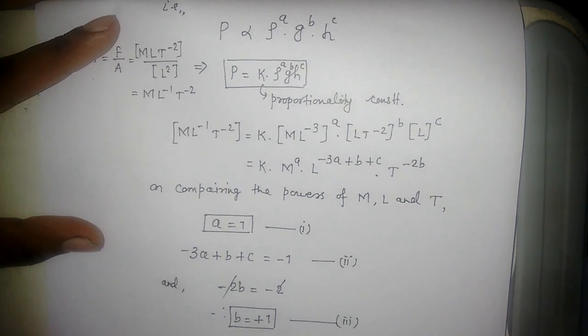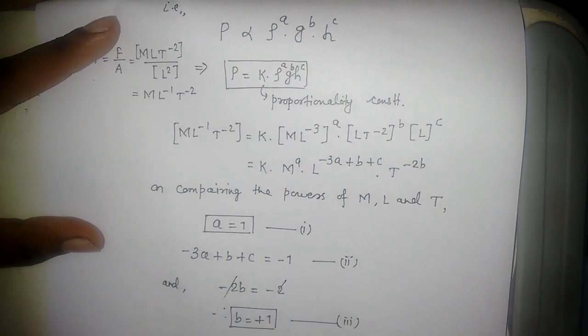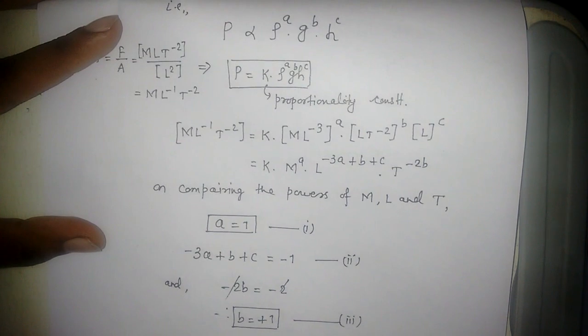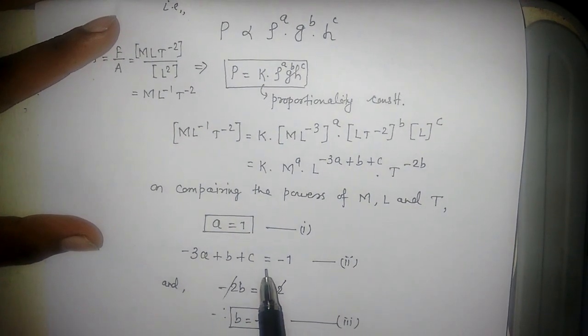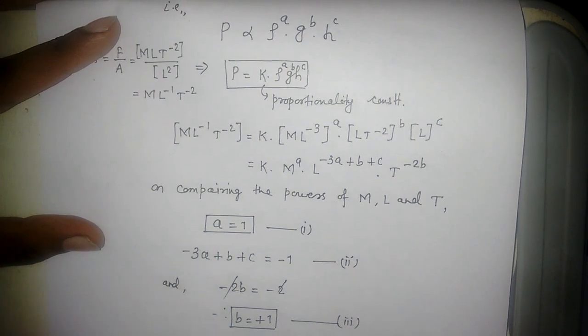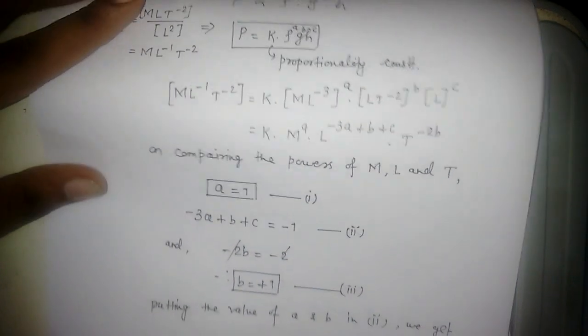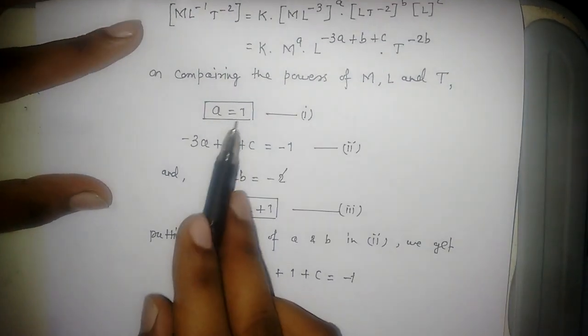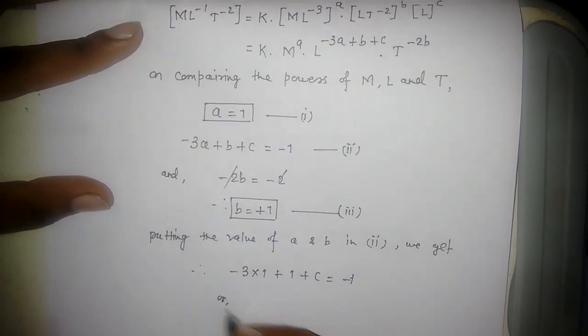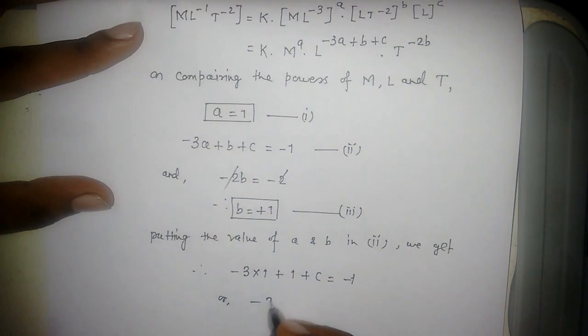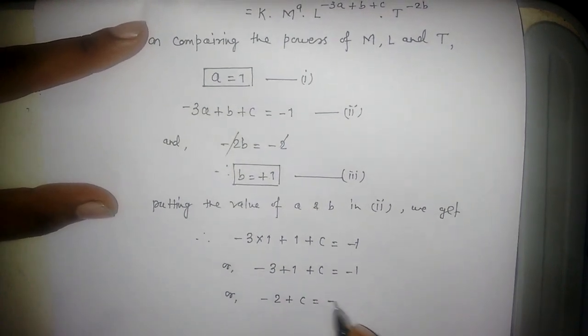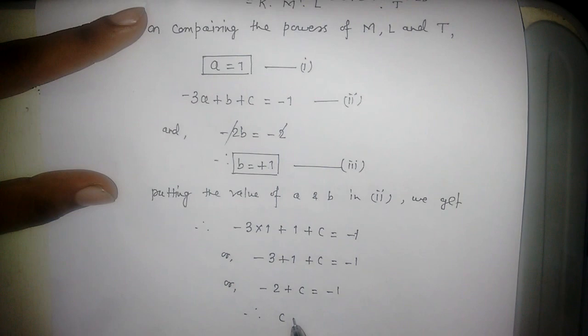Putting the values of a and b in the second equation: -3(1) + 1 + c = -1. So -2 + c = -1. Therefore, c = 2 - 1 = 1.